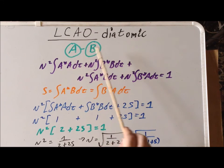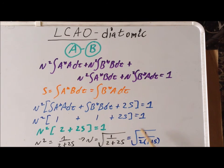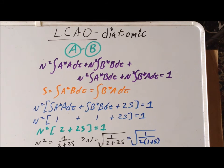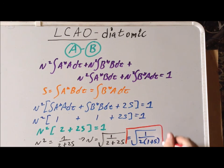One thing to notice is that in many semi-empirical computational methods, we set the overlap integral S to be 0. We can see immediately one of the benefits of doing this: because we set S to 0, this coefficient simply becomes the square root of 1 over 2. So that makes the coefficients always the same when we have a linear combination of atomic orbitals for a diatomic molecule. This is the case when we have a bonding orbital.